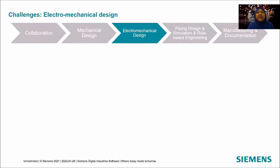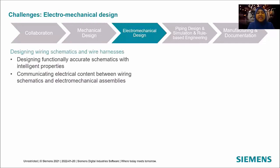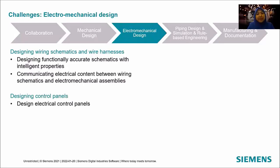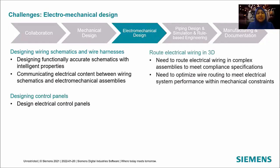The challenges in electromechanical design include designing wiring schematics, wire harness, and control panels. They require communication of electrical components between wiring schematics and electromechanical assemblies, and need to route electrical wiring in complex assemblies and optimize wire routing to meet electrical system performance.